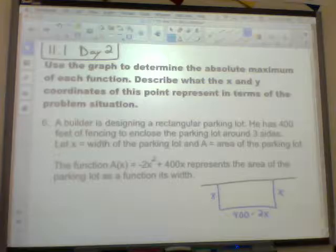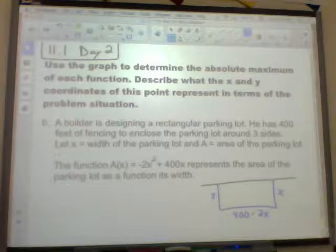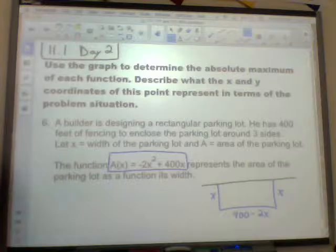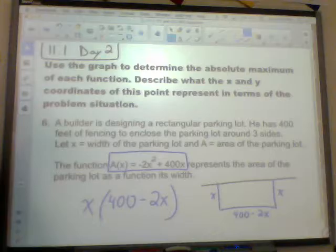Now what's going to be the area? Well, they even tell us. They said the area is going to be negative 2x squared plus 400x. They tell us right here. This is going to be the area of that parking lot. Now where did that come from? That came from multiplying that x, which was our width, times the 400 minus 2x. That's where this is coming from.